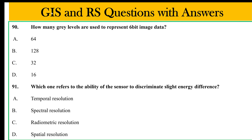How many grey levels are used to represent 6-bit data? To represent the raster model, 6-bit means 64 grey levels. Which one refers to the ability of the sensor to discriminate a slight energy difference? The options are temporal resolution, radiometric resolution, and spatial resolution. The answer is radiometric resolution — energy-based resolution that discriminates slight energy differences.